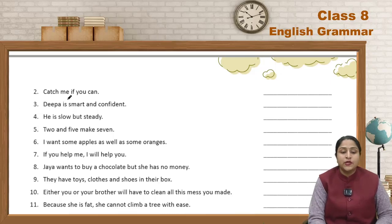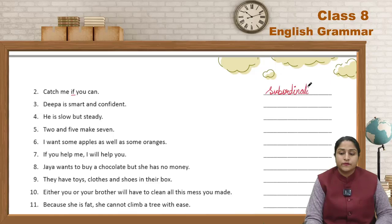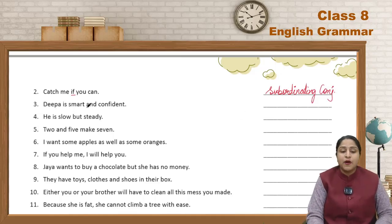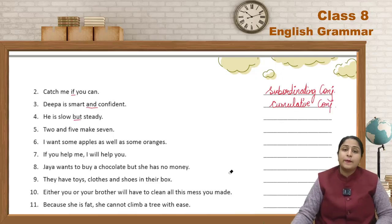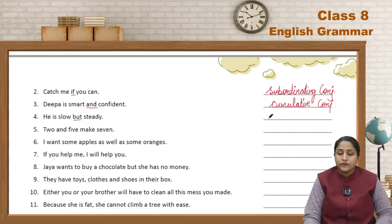Next: 'Catch me if you can.' Here 'if' is a Subordinating Conjunction. Next: 'Deepa is smart and confident.' Here 'and' is a Cumulative Conjunction — a type of Coordinating Conjunction. Next: 'He is slow but steady.' Here there is contrast, so 'but' is an Adversative Conjunction.